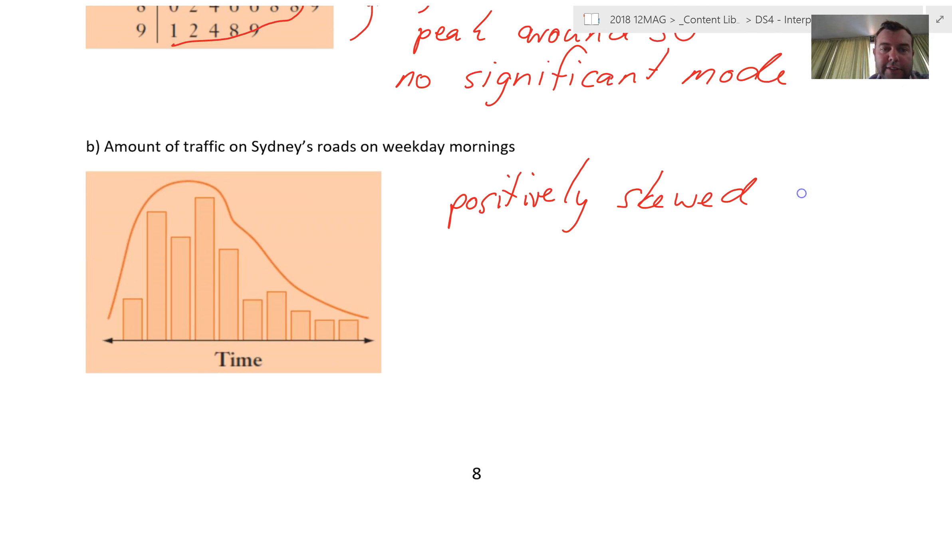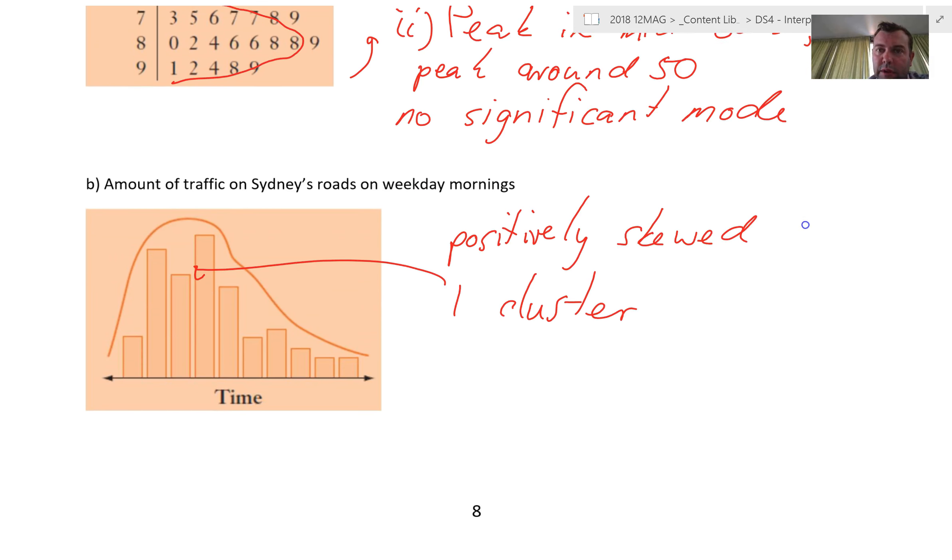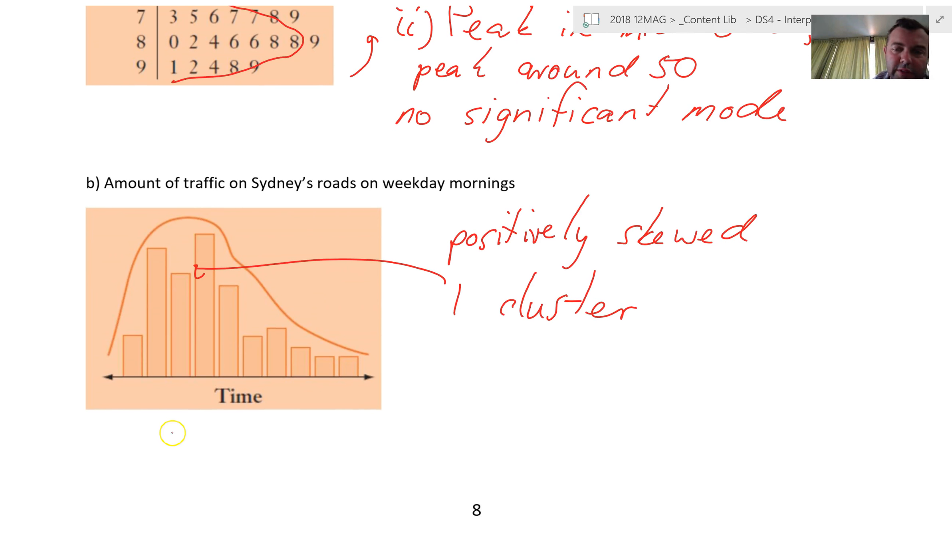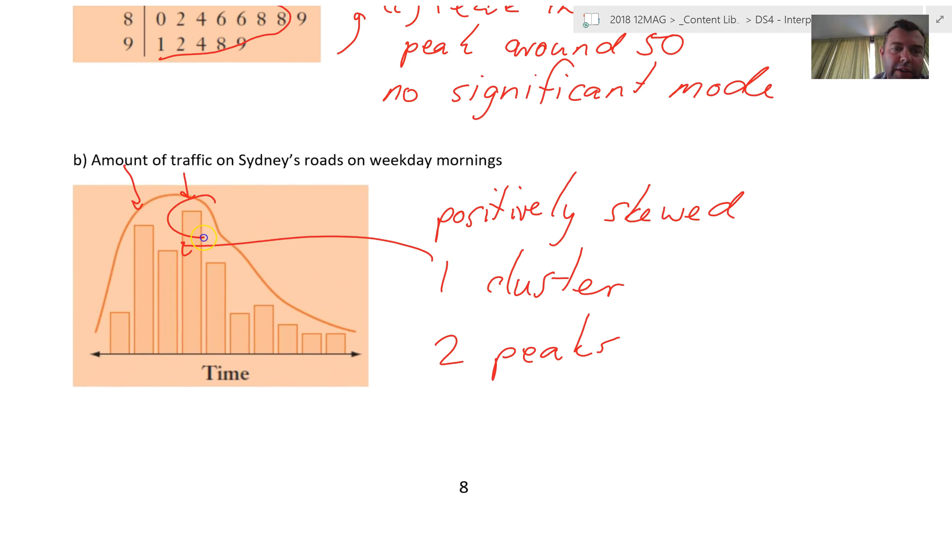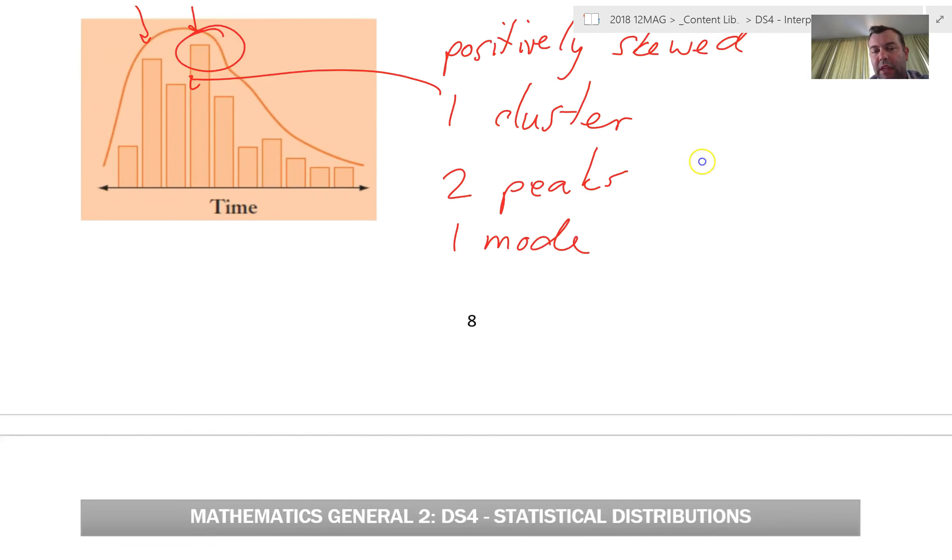What else do we want to know? Clusters? Not really. There's a bit of a cluster around here. One cluster. What else do we want to know? Peaks? I guess we can say there's two peaks, because there's sort of a peak here and here. And what else do we want to know? Modes. Well yeah, I can call that a mode. One mode. Whatever that is - we don't have any figures on there, so we can't read it off. That's probably fair enough to say those things.